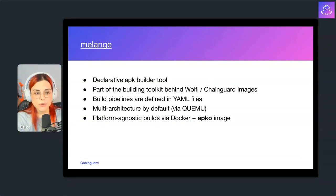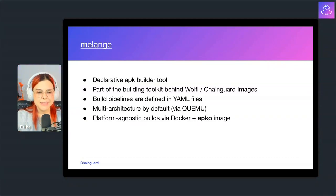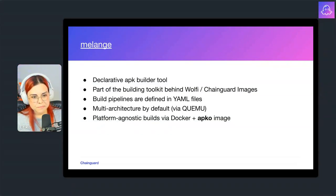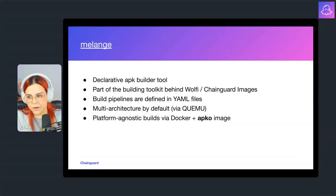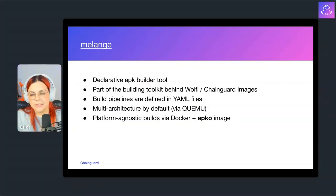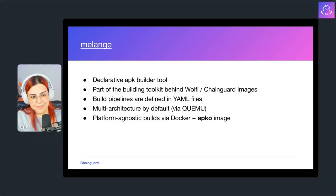Melange is a declarative APK build tool. You have a YAML file where you define your package and how it's going to be built — there's a lot of metadata and a pipeline you'll execute to create your package. Melange is also part of the toolkit behind Wolfi and Chainguard images. Build pipelines are defined in YAML files, and it builds for multiple architectures by default using QEMU. You can use Docker on your machine to run the Melange image as a platform-agnostic builder. We're going to see a demo today about building a small package with Melange.